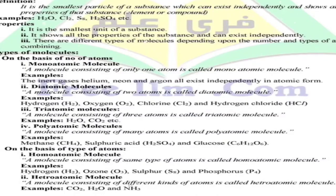Now, on the basis of type of atoms, homoatomic molecule. A molecule consisting of same type of atom is called homoatomic. Homo means same, atomic means atoms. So, molecules having same atoms are called homoatomic molecules. For example, hydrogen H2, ozone O3, sulfur S8, and phosphorus P4.